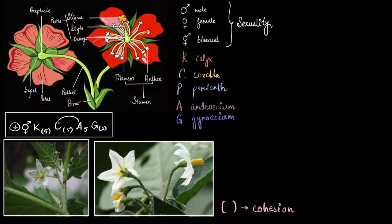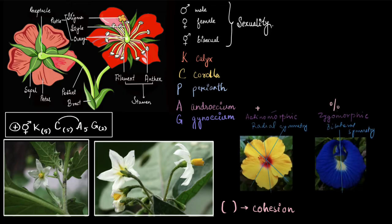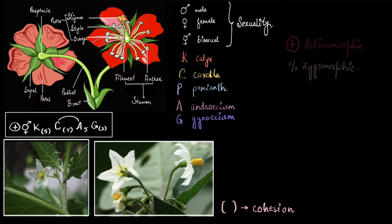We have almost covered all the parts of the floral formula except for the plus symbol at the beginning and the arc joining C and A. The plus or percentage symbol refers to the symmetry of the flower. Actinomorphic, meaning radial symmetry, is denoted by a plus symbol, while zygomorphic, or bilateral symmetry, is represented by a percentage symbol. This flower is actinomorphic — radially symmetrical.